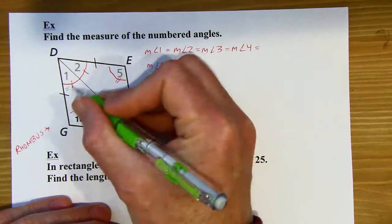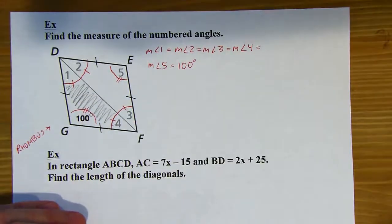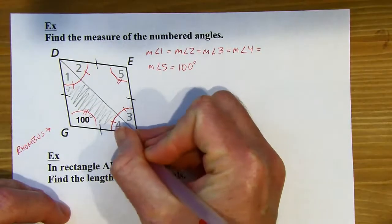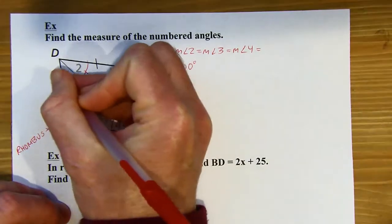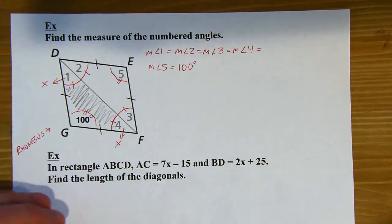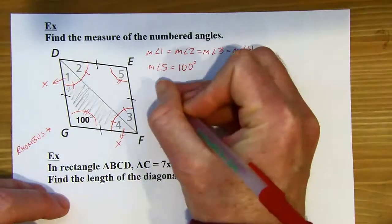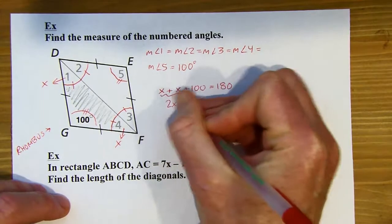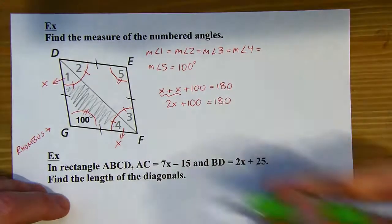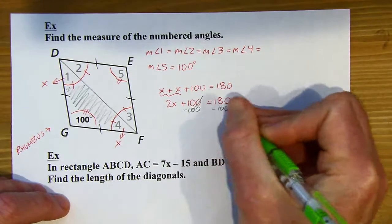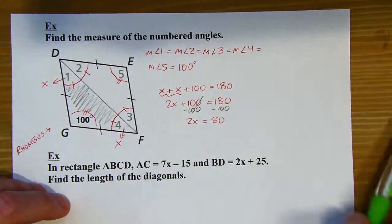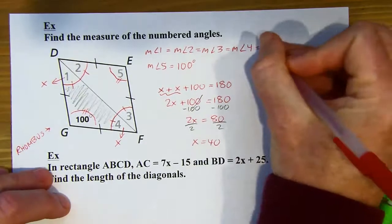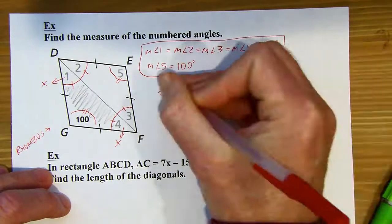I've got a rhombus here, but I also have triangles. Looking at this triangle, it's an isosceles triangle. Because angles one and four are congruent, let's call angle four X. Whatever it equals, angle one has the same measure, so that's also X. Now I can write an equation: all three angles add up to 180 degrees, so X plus X plus 100 equals 180. Combining like terms, then subtracting 100 and dividing by two gives X equals 40. So all of those angles — one, two, three, and four — have a measure of 40 degrees.